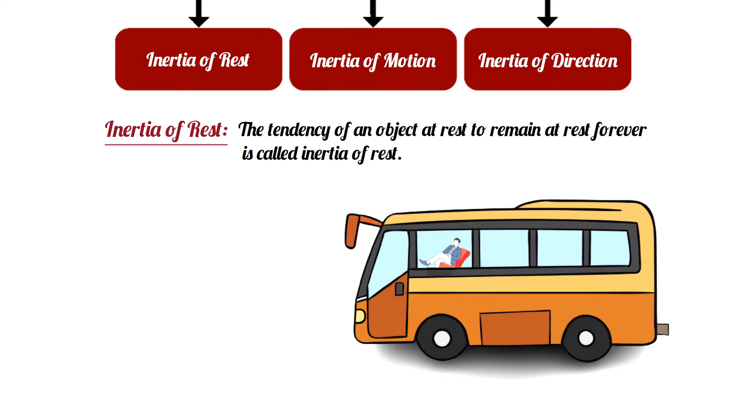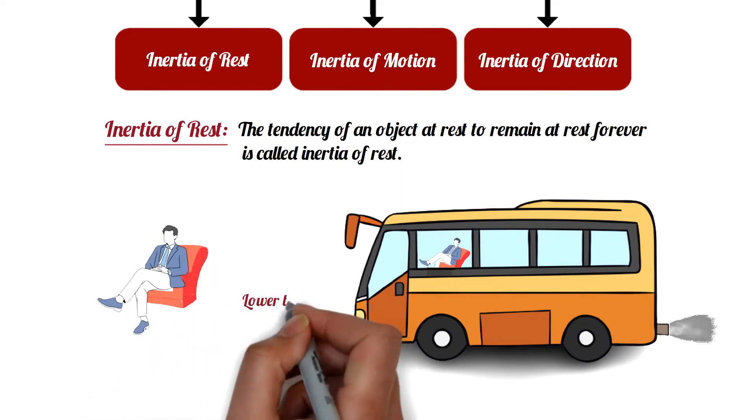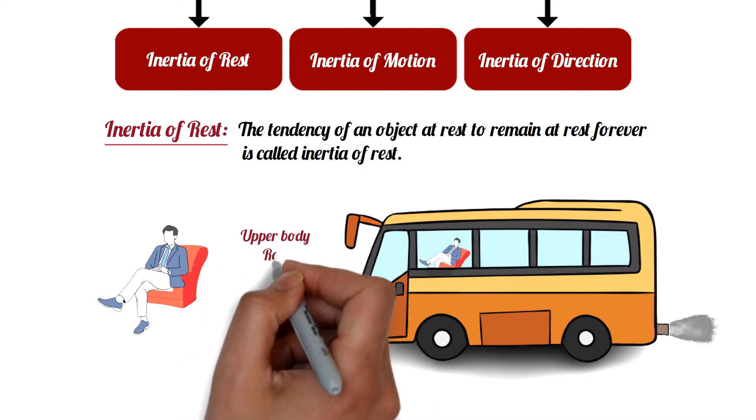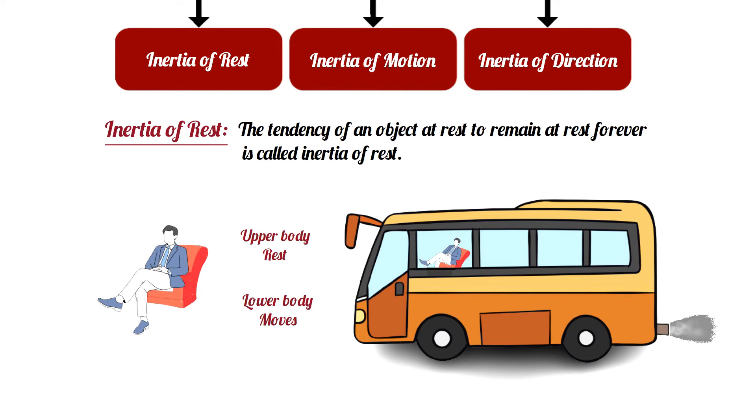When the vehicle is at rest, the passenger's body is also at rest. As soon as the car starts moving, the lower body of the passenger moves in line with the car, while his upper body tries to stay at rest. As a result, the passenger leans backward in the opposite direction of the vehicle.